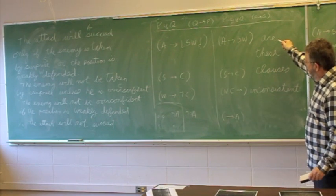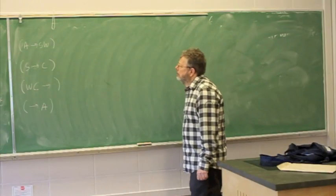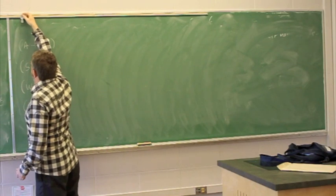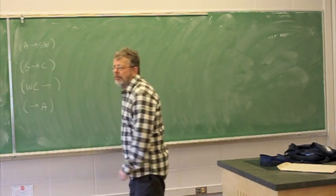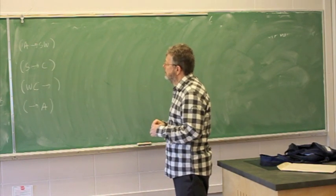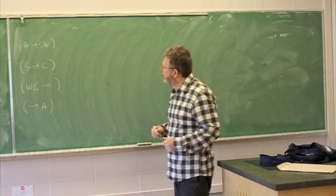So now we ask the same question: are these clauses inconsistent? So now we do the same thing, except we have a different set of clauses, smaller set, weaker set. And it's going to turn out that these are consistent, so we can't derive the empty clause. But let's see what happens.